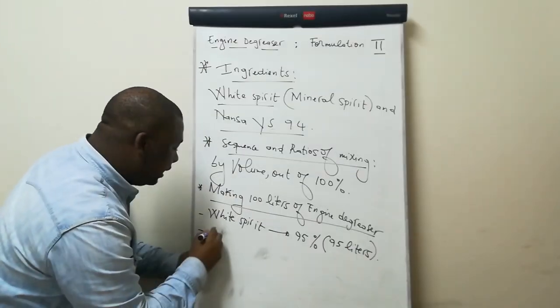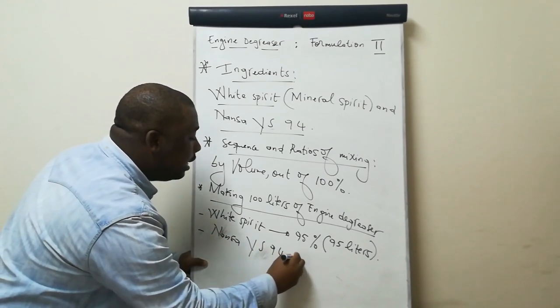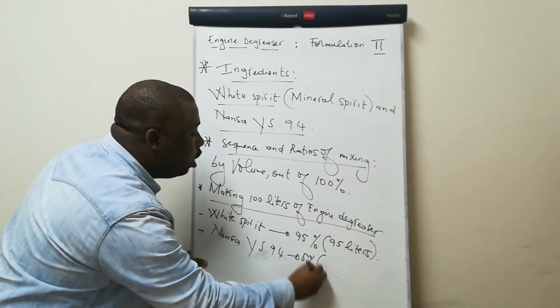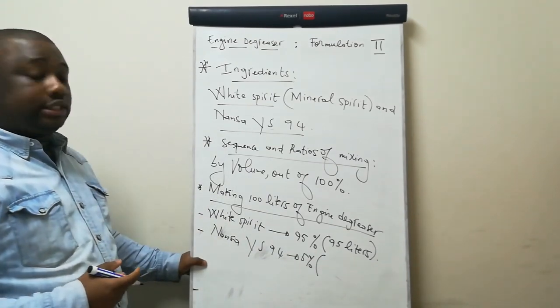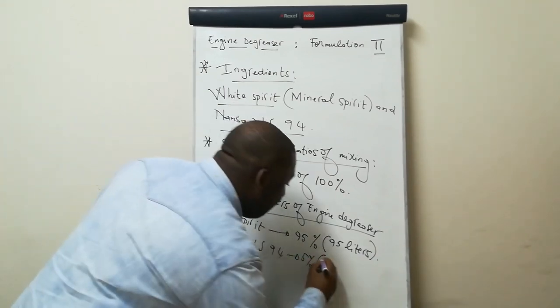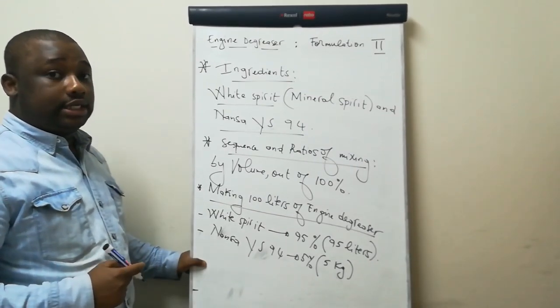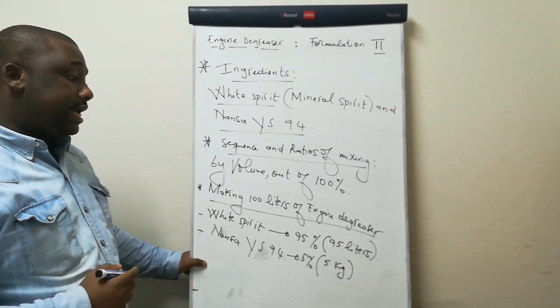The next ingredient is our Namsa YS94. This should be 5% of the total volume. We need to consider about 5 kg of Namsa YS94 out of the 100 liters of engine degreaser that we're manufacturing.